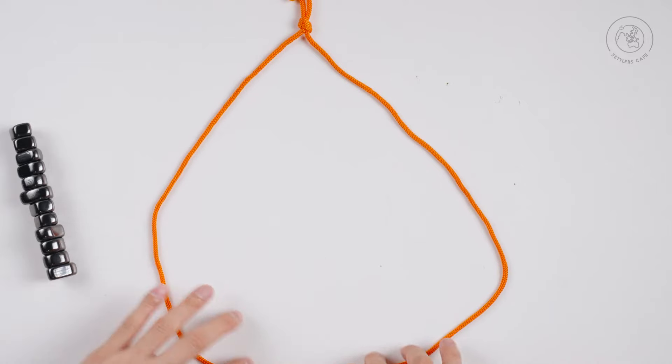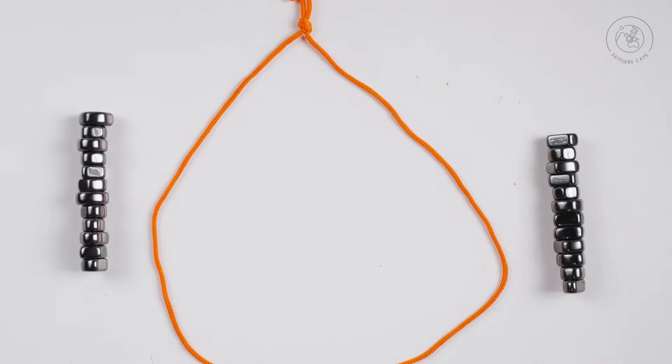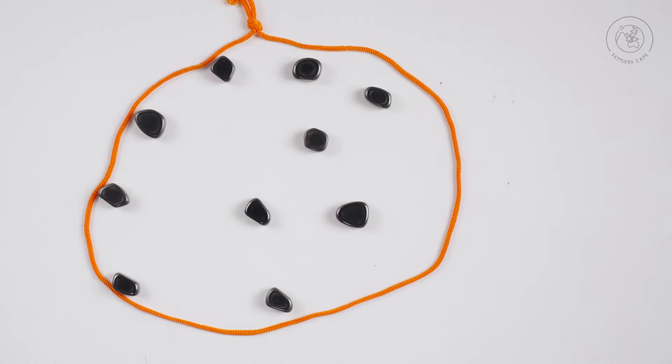To set up, place the rope out and share the magnets equally between each player. Starting with the youngest player, take turns to place one of your magnets into the middle.